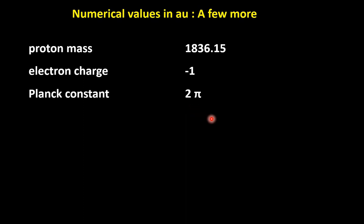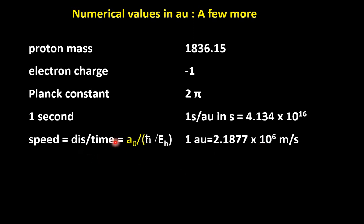And finally, numerical values in atomic unit, a few more examples. Say for example, proton mass. Proton is roughly 1836.15 times of electron. So definitely the factor in atomic unit, if you write proton mass, then the factor would be 1836.15. Similarly, electron charge, you see, proton charge is taken as 1 atomic unit. So electron charge definitely is minus 1 atomic unit. Planck constant h bar by 2. h bar is 1. So that means h by 2π is 1. So h is of course 2π. So the factor is 2π. One second, similarly, we can express atomic unit in seconds. If you put it, then I get this factor 4.134 times 10 to the power 16.